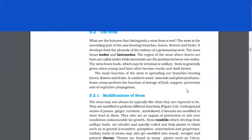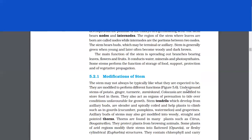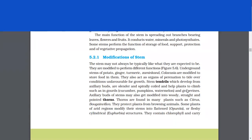The main function of the stem is spreading out branches bearing leaves, flowers, and fruits. It conducts water, minerals, and photosynthates. Some stems perform the function of storage of food, support, protection, and of vegetative propagation. Modifications of stem. The stem may not always be typically like what they are expected to be. They are modified to perform different functions.